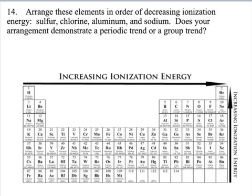Chlorine would have the highest, and because we're going decreasing, we're going highest to lowest. The next lowest would be sulfur, then we would have aluminum, and then finally sodium would have the lowest ionization energy.